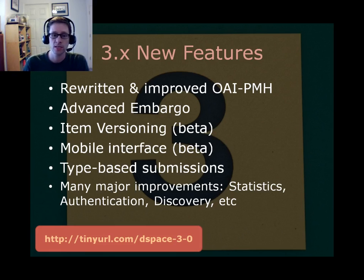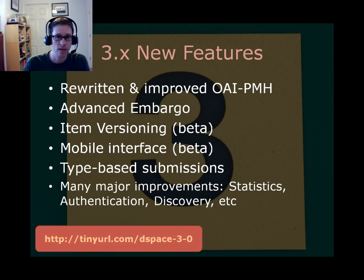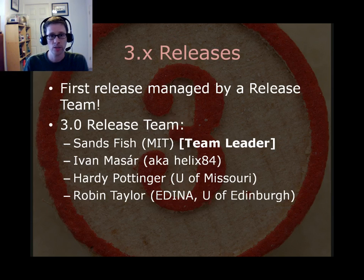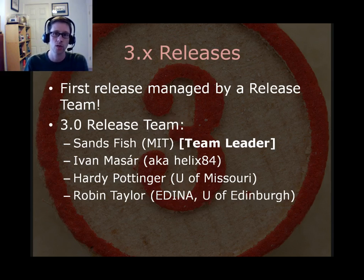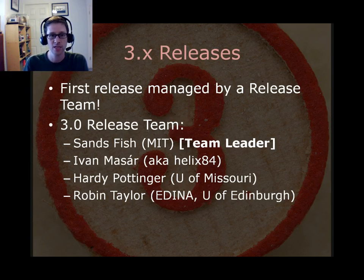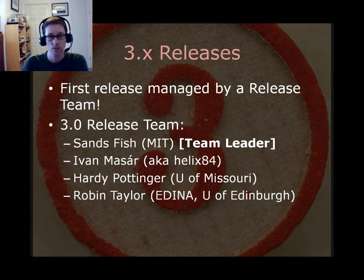There are many other improvements within DSpace 3. If you want to learn more, I'd encourage you to visit the URL at the bottom of this slide for the DSpace 3.0 release notes, or just search '3.0 release notes' in Google. I also want to mention that DSpace 3 is the first release managed via a release team. In the past, the committers team would have a single release coordinator. We realized it was getting too big a job for one person, so we created a release team concept. These four individuals did an absolutely wonderful job, and we'll be doing the same for DSpace 4 because of the success of this process.